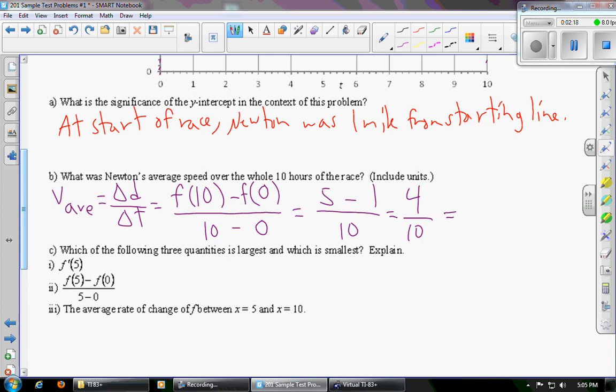So you can leave it as a fraction, you can reduce the fraction, you can write it as a decimal, but do include units. Upstairs was miles, downstairs was hours. So Newton traveled at 0.4 miles per hour.